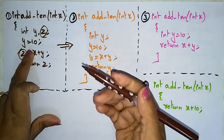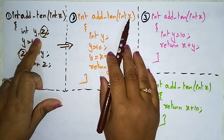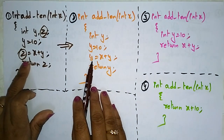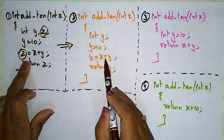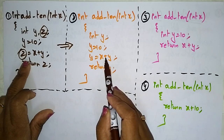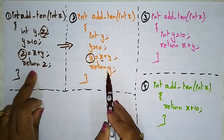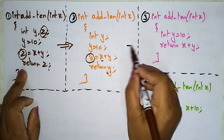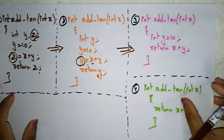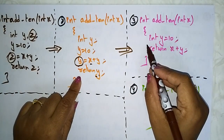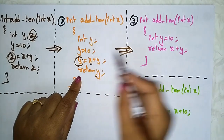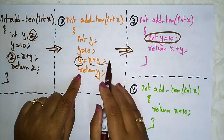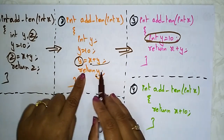After eliminating z, we keep only two variables: y is assigned 10, and we return x plus y directly instead of storing it in z. We can reduce further by combining declaration and initialization in one step, and rather than performing y equals x plus y as a separate statement, we directly return x plus y.